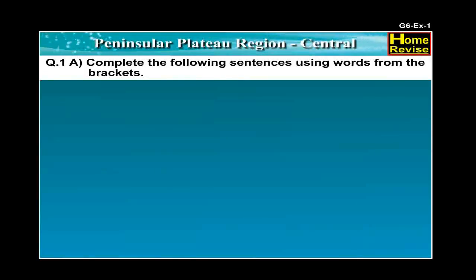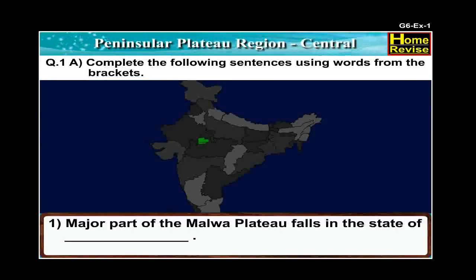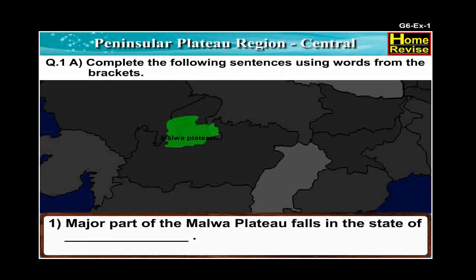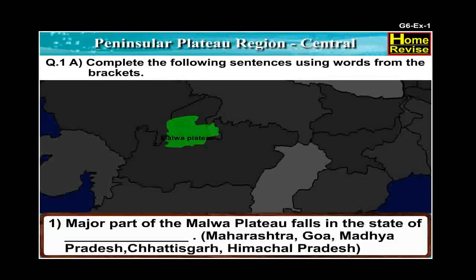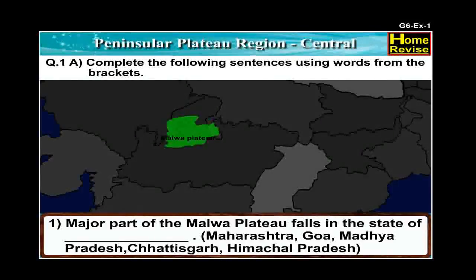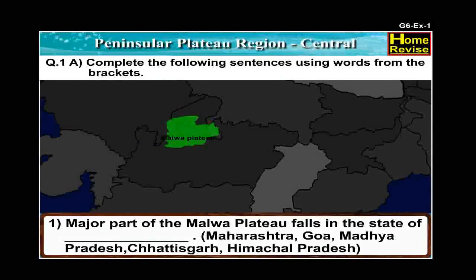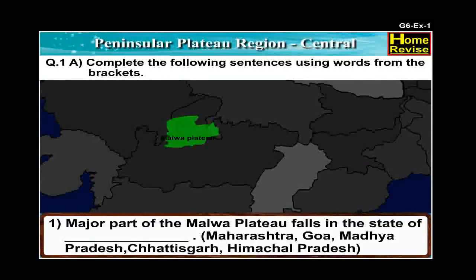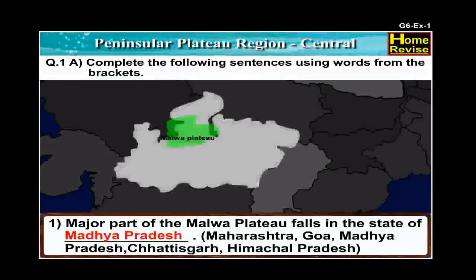Exercise, Question number 1A. Complete the following sentences using words from the brackets. Number 1: Major part of Malwa Plateau falls in the state of dash. Your options are Maharashtra, Goa, Madhya Pradesh or Himachal Pradesh. The answer is: Major part of the Malwa Plateau falls in the state of Madhya Pradesh.